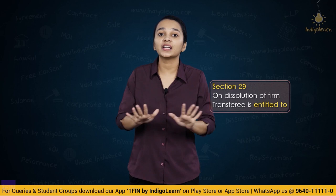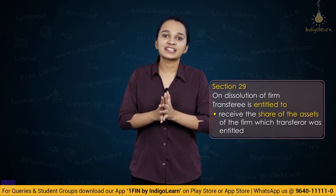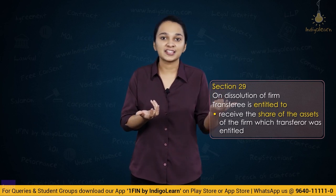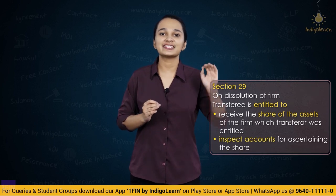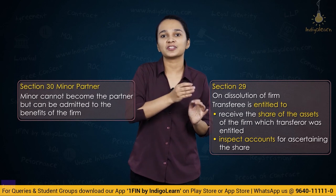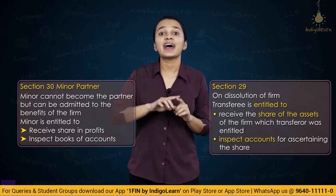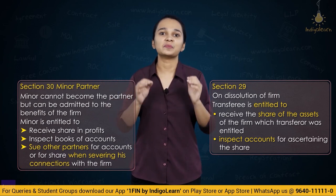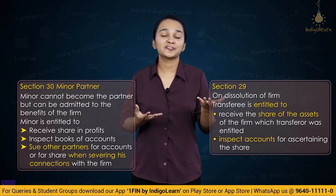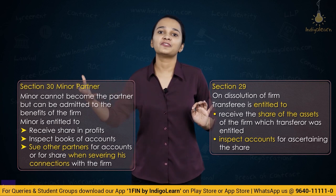Section 29 — if a partner transfers his share to a third person, that person is entitled to share in profits but cannot interfere in management or access books of account. However, if the firm dissolves or the partner retires, the transferee is entitled to his share in the assets and may access books of account to ascertain his share. Section 30 — a minor cannot become a partner but can be admitted to the benefits of the firm. He is entitled to a share in profits, can inspect books of account, and can sue other partners if his connection with the firm is severed. His liability is limited to his share in the firm.